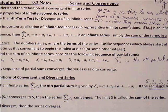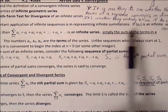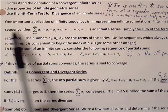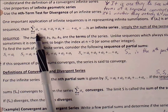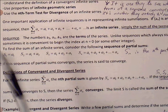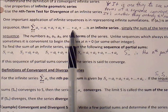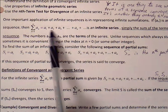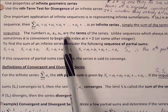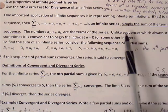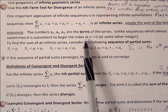One important application of infinite sequences is in representing infinite summations. If a_n is an infinite sequence, then the summation of a_n is simply notation for adding up a sequence of values with plus signs: a_1 + a_2 + a_3 all the way to a_n. We consider this an infinite series — the sum of the terms in a sequence. The numbers a_1, a_2, a_3 are the terms of the series. Unlike sequences which always start at 1, sometimes it is convenient to begin the index at n = 0 or some other integer.